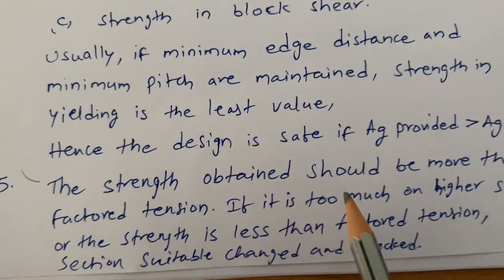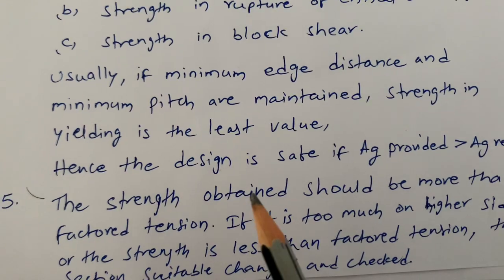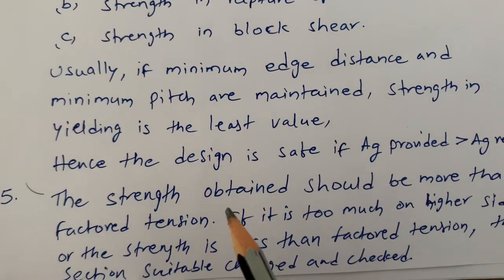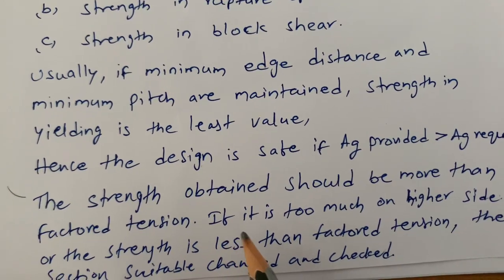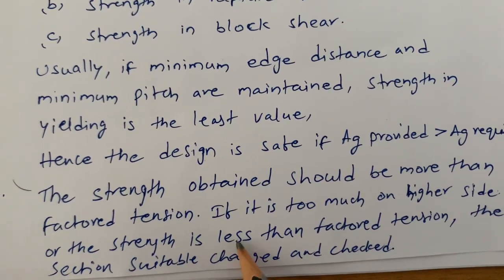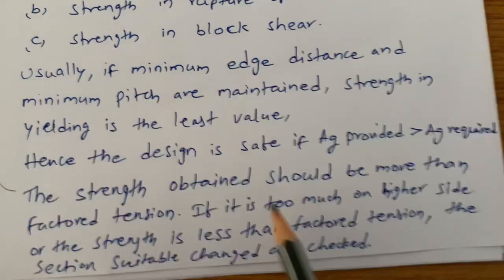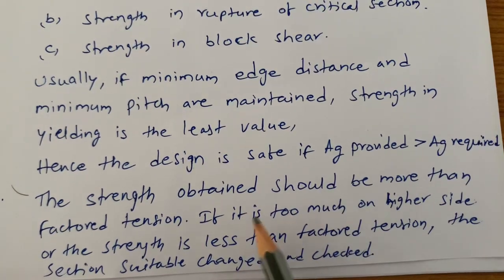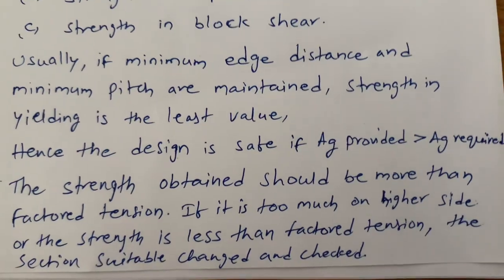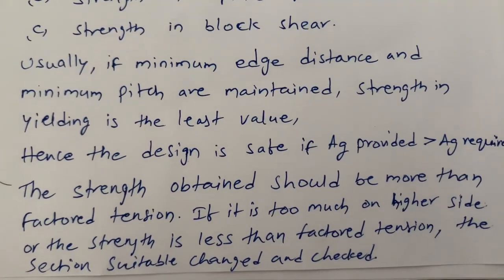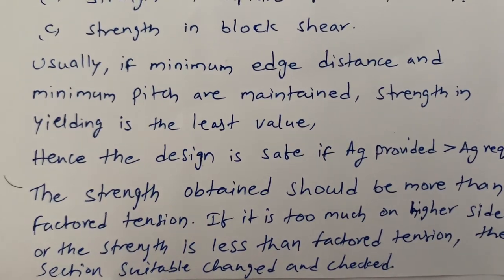Next, the strength obtained should be more than the factored tension — that is, the applied load. If the strength is less than the factored tension, or if it is too much on the higher side, then we need to change the section and check it again.